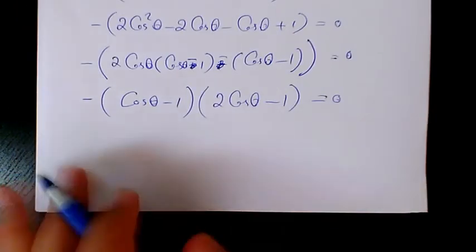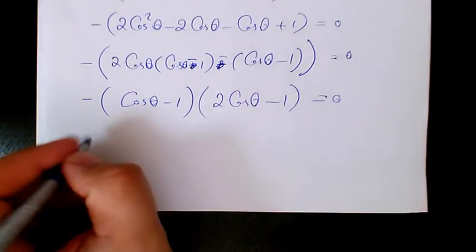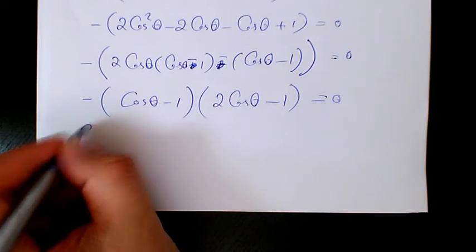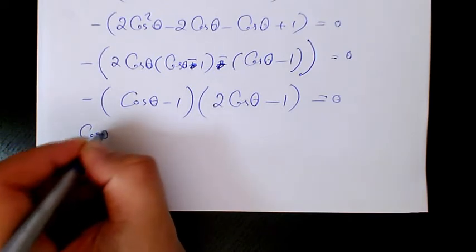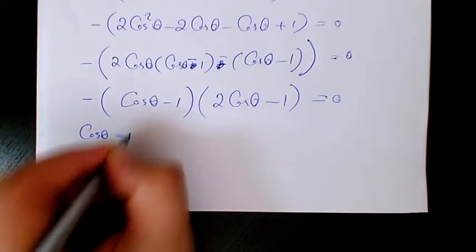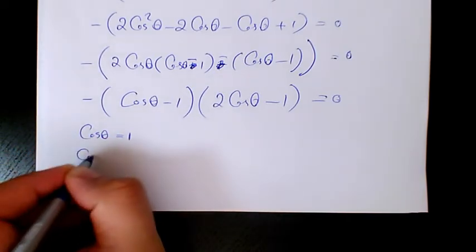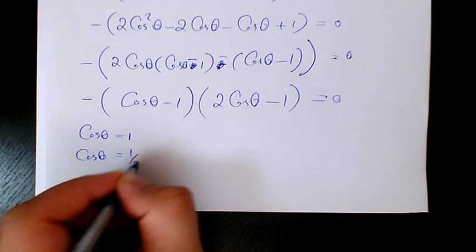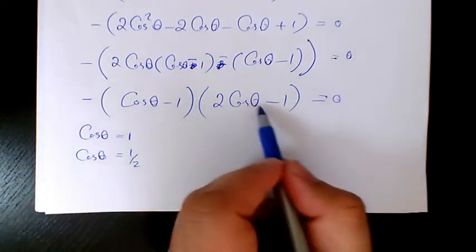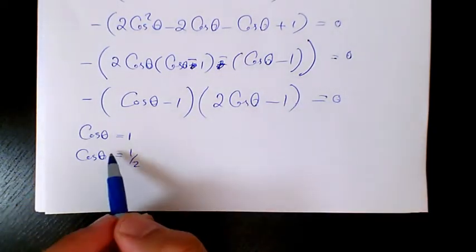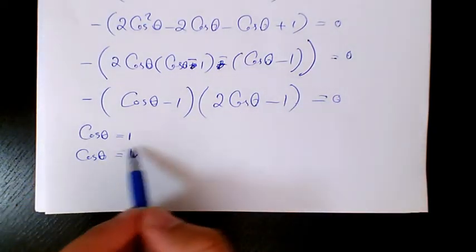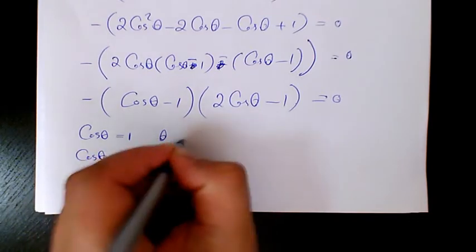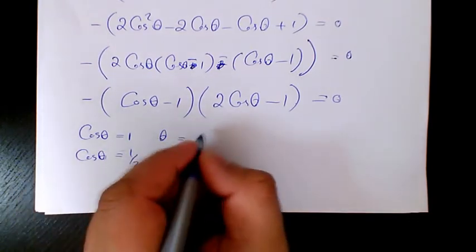We now have two factors: cosine theta minus 1 and 2 cosine theta minus 1. Setting each equal to zero gives cosine theta equals 1, or 2 cosine theta minus 1 equals 0, so cosine theta equals 1/2.